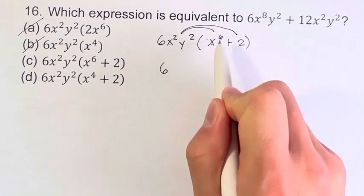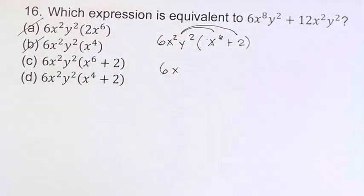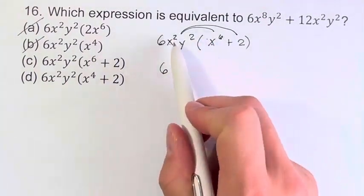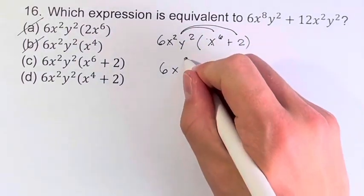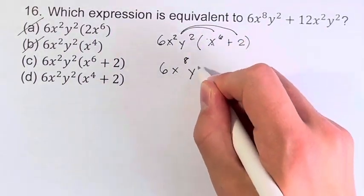We have x squared times x to the sixth. When you're multiplying two variables together, you add their exponents. So x to the 2 plus 6 is x to the 8th times y squared at the end.